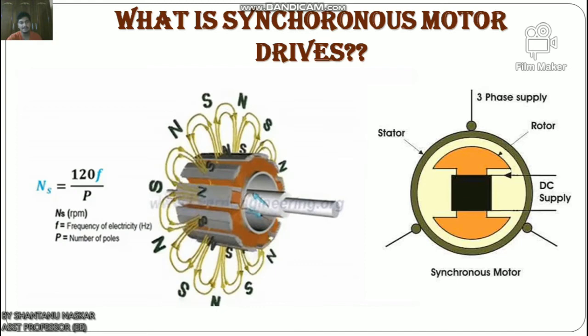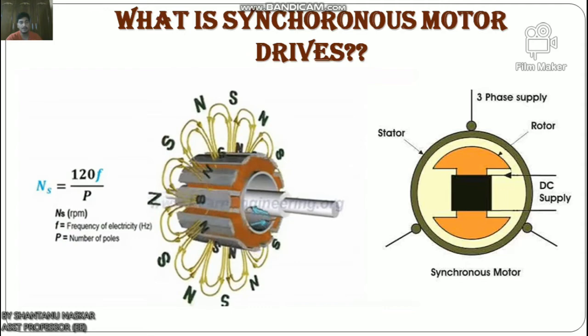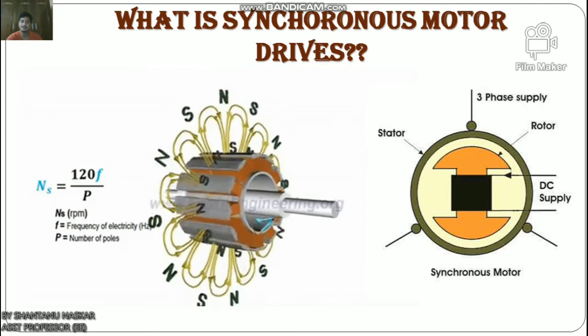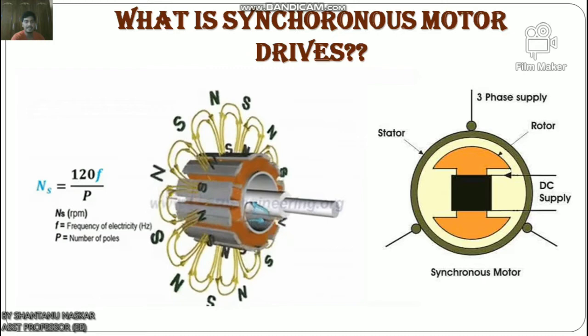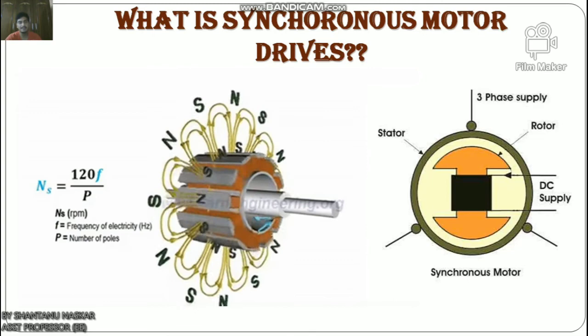Now we will discuss braking of synchronous motors. There are three types of braking: regenerative braking, dynamic braking, and plugging. For synchronous motor drives, only dynamic braking can be applied; plugging can be applied theoretically, but regenerative braking cannot be applied as it needs a higher speed than synchronous speed. Dynamic braking is done by disconnecting the motor from supply and connecting it across a three-phase resistor — at this time, the motor works as a synchronous generator and energy is dissipated in the resistor.